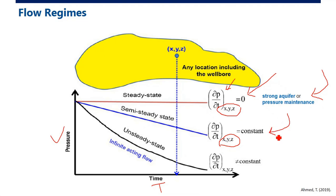In pseudo-steady state, everywhere in the reservoir the pressure decrease is the same — the rate of pressure decrease is the same at all points. The pressure drops uniformly across the reservoir simultaneously.